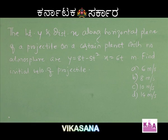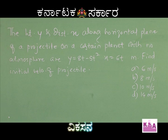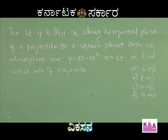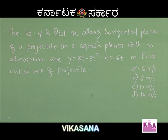Let me read it once. The height y and the distance x along the horizontal plane of a projectile on a certain planet with no atmosphere are given as y equal to 8t minus 5t squared, and x equal to 6t meters, where t is in seconds. Find the initial velocity of the projectile. The options given are 6, 8, 10, and 14 meters per second.